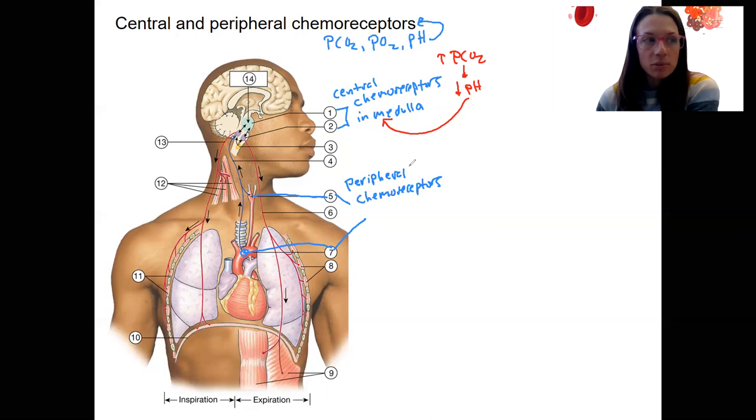Peripheral chemoreceptors can also respond to both pH and PCO2. So PO2 is not as important a signal, so low PO2, which is kind of strange, right? But it's largely due to that pH effect. Detecting carbon dioxide quickly is more important than hypoxia.